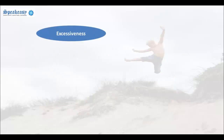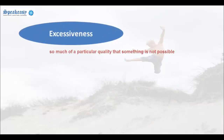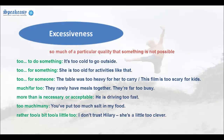Let's look at the use of 'too' to show excessiveness — so much of a particular quality that something is not possible. 'Too' + infinitive: 'It's too cold to go outside.' 'Too for something': 'She is too old for activities like that.' 'Too for someone': 'The table was too heavy for her to carry,' or 'This film is too scary for kids.'